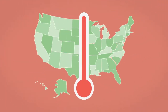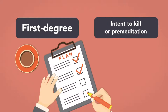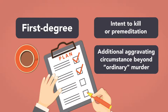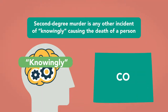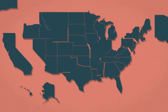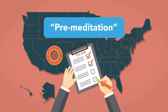States typically classify murder by degrees. The most common classifications are first degree and second degree murder. First degree may be defined by intent to kill, or premeditation, or some additional aggravating circumstance beyond ordinary murder. For example, in Colorado, a person commits first degree murder if, after deliberation and with intent to cause the death of a person other than himself, he causes the death of that person or of another person. Second degree murder is any other incident of knowingly causing the death of a person.